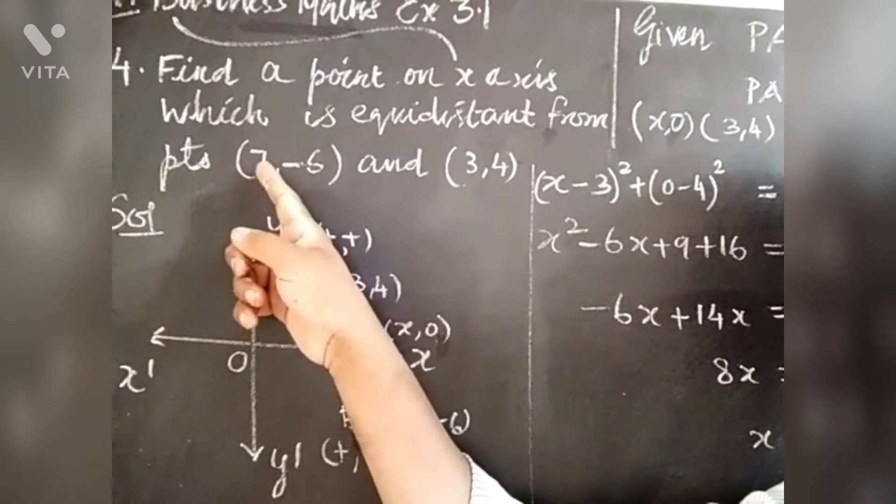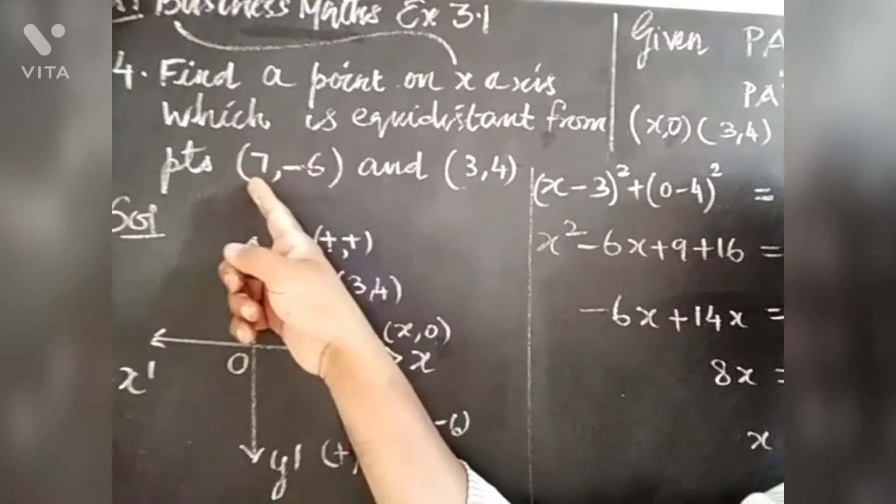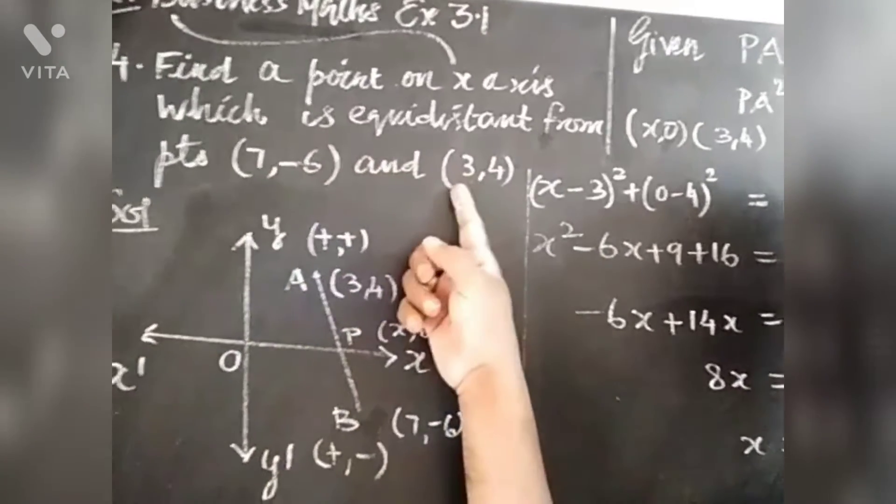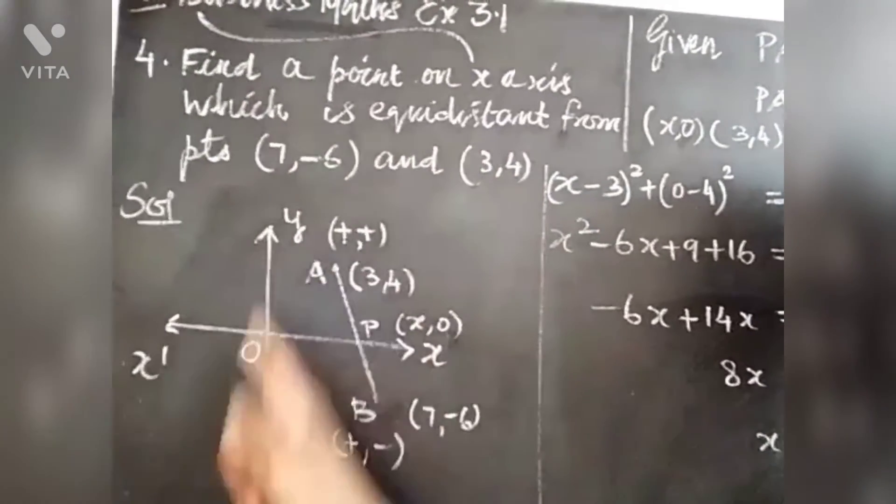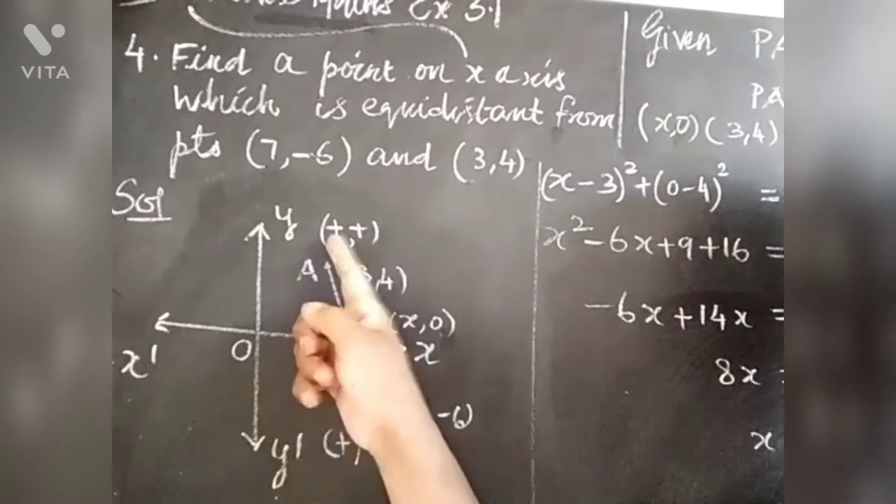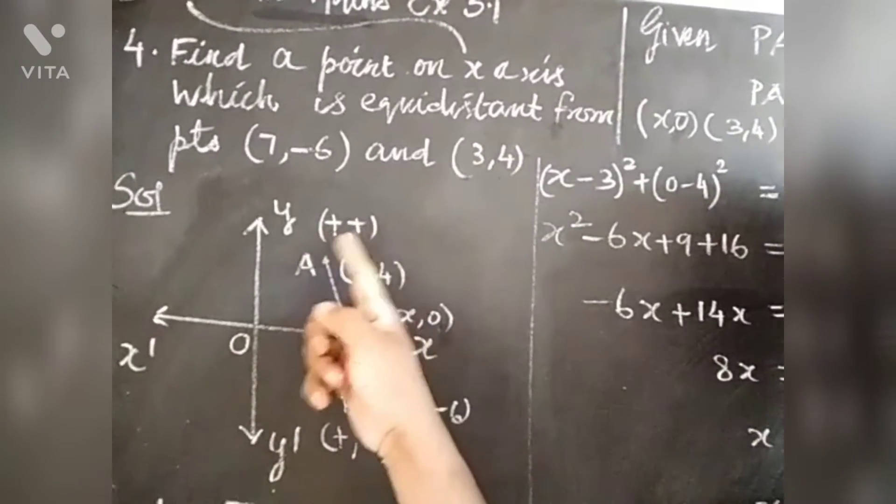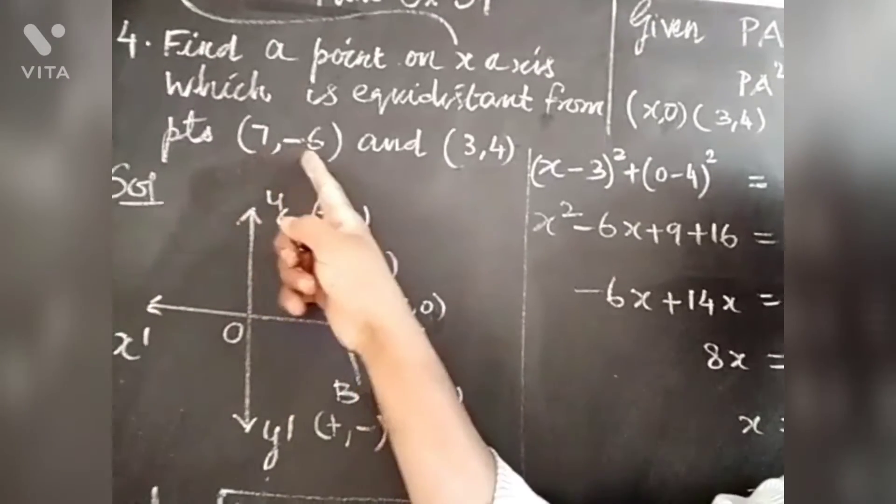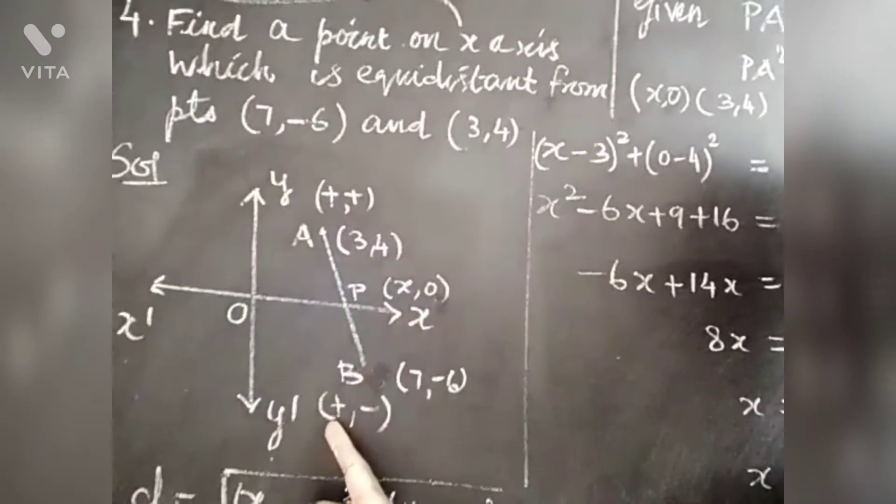Here we will plot the points. To plot, the point is plus minus x plus y minus x plus y plus. In the first quadrant, we will plot a plus plus. x plus y plus is the first quadrant. x plus y minus is the fourth quadrant.